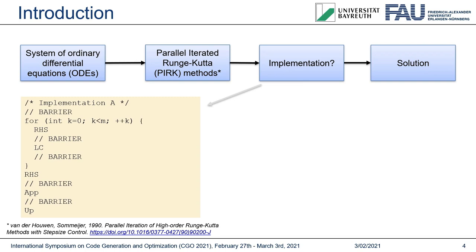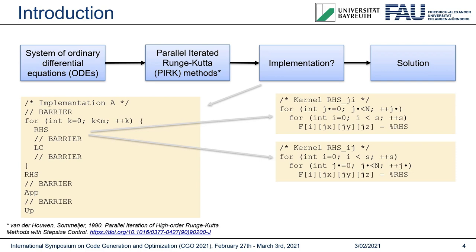Kernel RHS, for instance, has a 4D loop structure, which naturally leads to different kernel variants by interchanging the loops. This gives us, for example, kernels RHS-JI and RHS-IJ, where the I loop runs over the number of stages of the ODE method and the J loop runs over the three dimensions of the ODE system grid. This already doubles our implementation count.